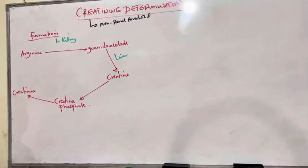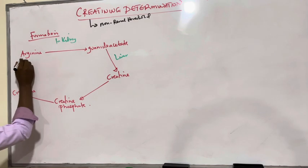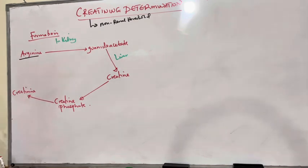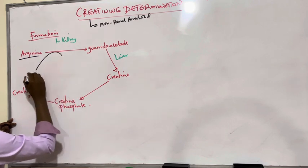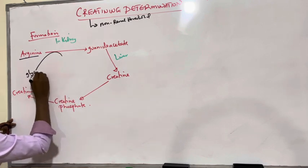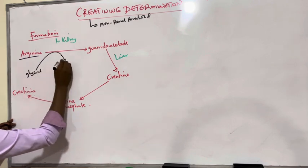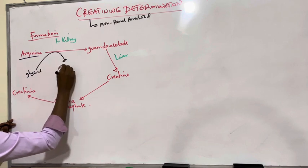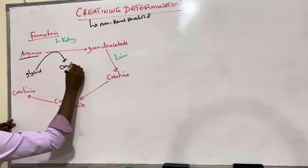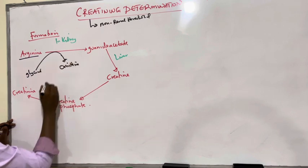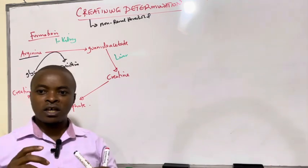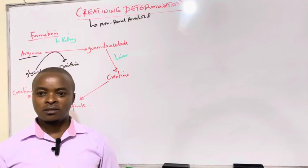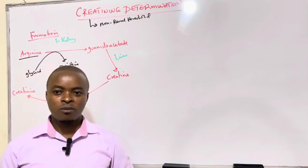This creatinine is formed whereby if we have arginine and we add glycine, this glycine converts arginine to ornithine. This is the first process during formation of creatinine, and creatinine is formed in the muscles, majorly skeletal muscles.